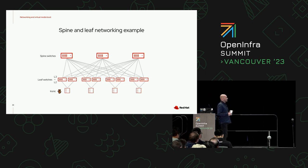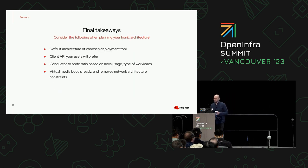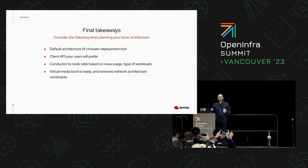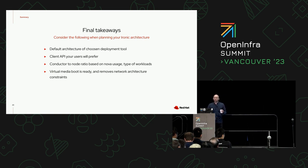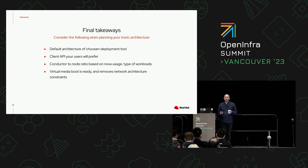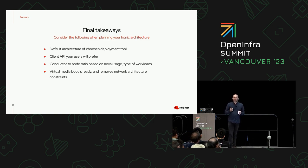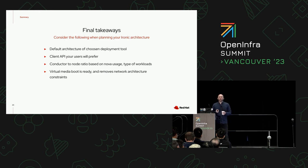Some final takeaways: different deployment tools have opinionated architectures, so keep that in mind. Your end users have preferences about the APIs they'd prefer to use. You've got a few things to consider when working out your conductor-to-node ratio, based on workload type. And virtual media boot is ready and removes network architecture constraints — but some hardware vendors are more ready than others, so I'd recommend doing your own evaluation before making firm decisions about your network architecture based on the assumption that it'll just work.